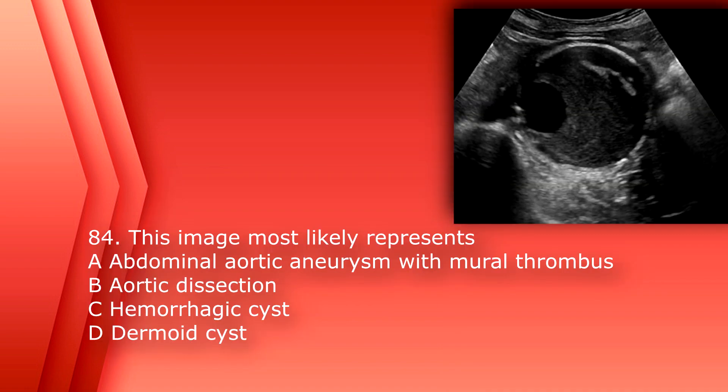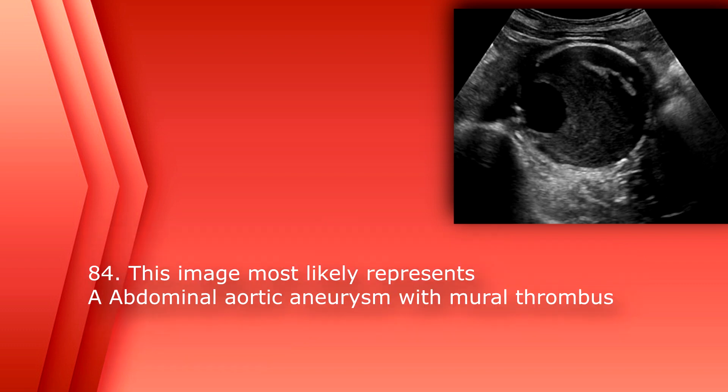Number 84: this image is a very vascular malformation. The image most likely represents A. Abdominal aortic aneurysm with mural thrombus. B. Aortic dissection. C. Hemorrhagic cyst. Or D. Dermoid cyst. The answer is A. Abdominal aortic aneurysm with mural thrombus.